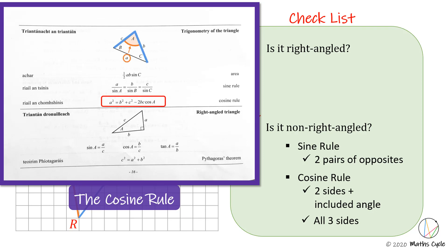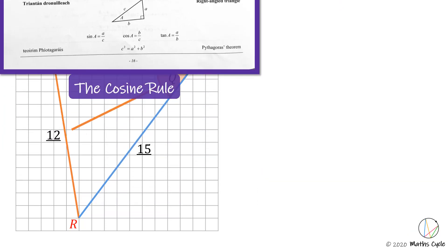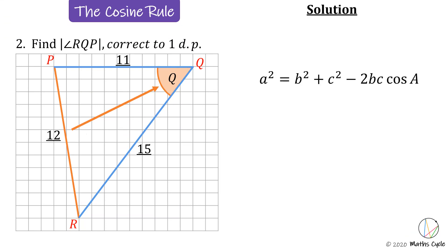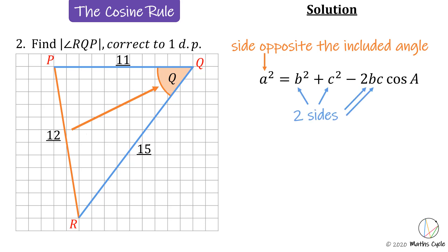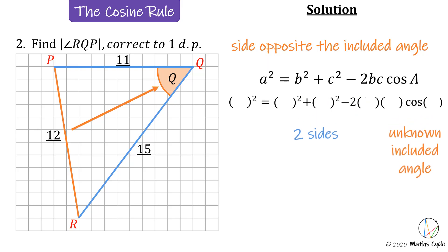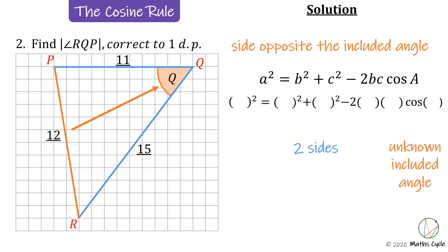We have the structure we need for the cosine rule. Using the cosine rule to build our solution: a is the side opposite the included angle, b and c are the two sides either side, and A is the included angle we don't know. Subbing in our values: the side opposite the included angle is 12, so 12 squared equals 11 squared plus 15 squared minus 2 times 11 times 15 times cosine of Q.